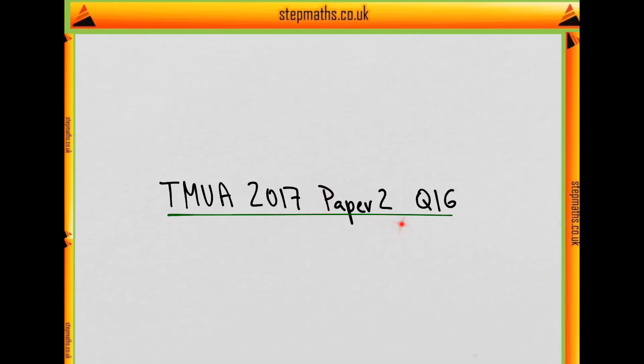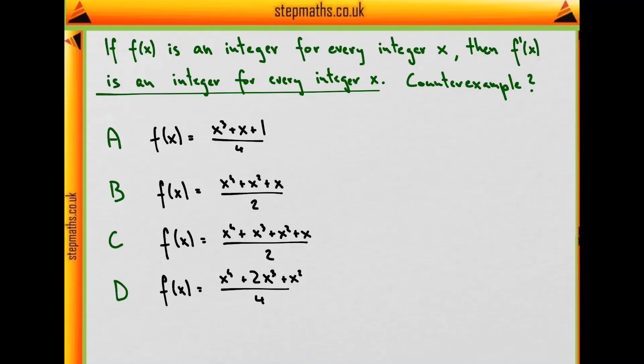This is question 16 from the second paper of the 2017 exam. The question starts with a bold statement: if f(x) is an integer for every integer x, then f'(x), the derivative, also has to be an integer for every integer x. Our mathematical intuition should immediately tell us that this statement is too daring, too general to be true. It shouldn't come as a surprise that they want us to find a counterexample to this statement, which is definitely false.